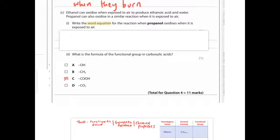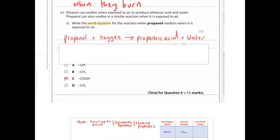So that means it just reacts with oxygen. Word equation doesn't mean a chemical equation. So you do propanol plus oxygen produces propanoic acid and water. You're just basically substituting ethanoic acid with propanoic acid and carrying that forward.